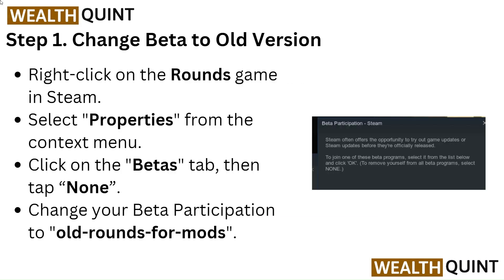Step 1: Change beta to old version. Right-click on the Rounds game in Steam and select Properties from the context menu. Click on the Betas tab, then tap None. Change your beta participation to 'old rounds' for most.